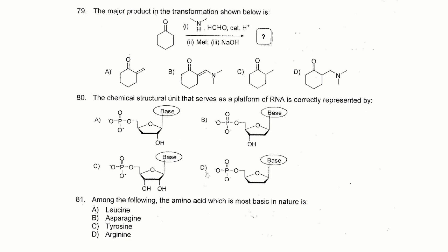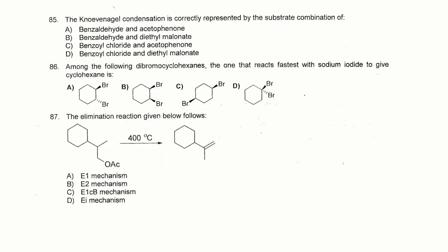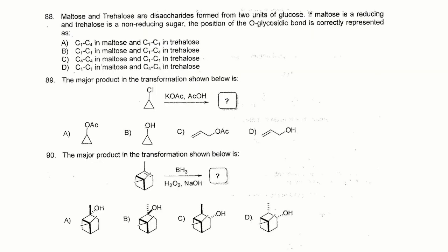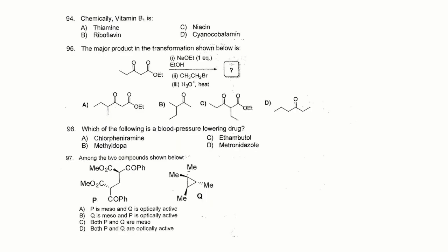Question numbers 79 to 81 and 82 to 84 — these questions are related to chemistry, based on graduate-level chemistry. Question numbers 85 to 87 — you can take help from this question paper and prepare for CUSET 2020. Question numbers 88 to 90 are related to MSC Chemistry. Question numbers 91 to 93 have diagrams with four options; you have to mark the correct option on the OMR sheet. Question numbers 94 to 97 all have four options.